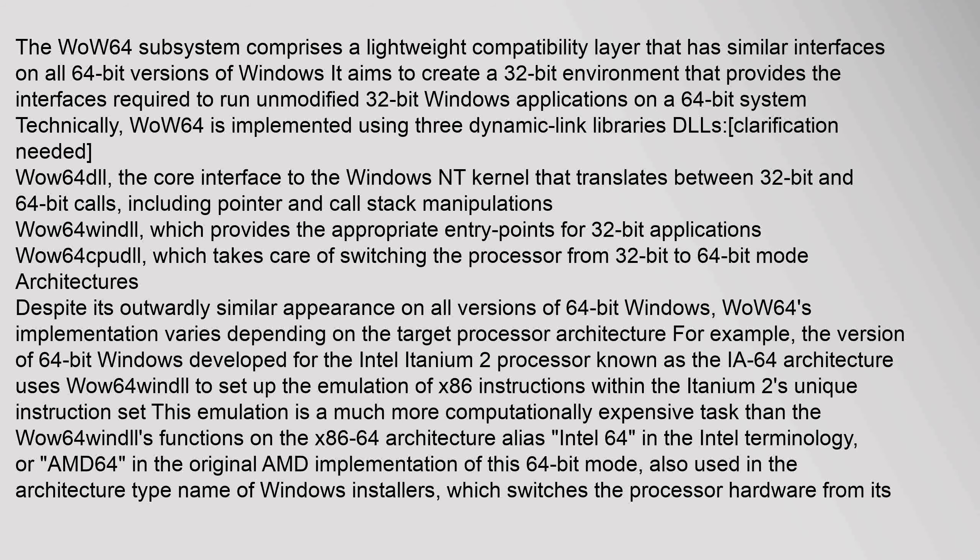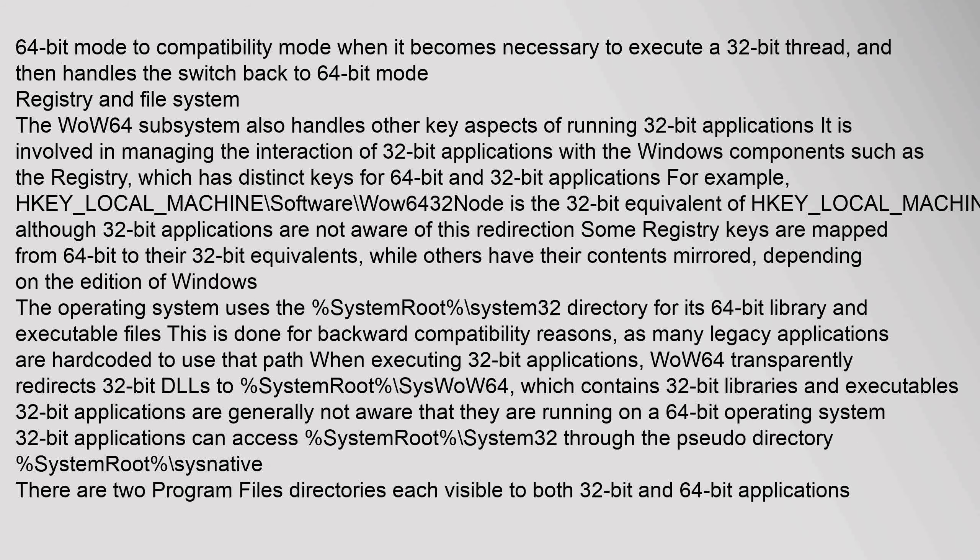Despite its outwardly similar appearance on all versions of 64-bit Windows, WOW64's implementation varies depending on the target processor architecture. For example, the version of 64-bit Windows developed for the Intel Itanium 2 processor — known as the IA64 architecture — uses WOW64Win DLL to set up the emulation of x86 instructions within Itanium 64-bit mode, switching to compatibility mode when necessary to execute a 32-bit thread, then handling the switch back to 64-bit mode.